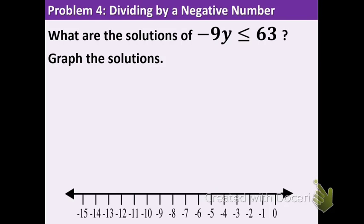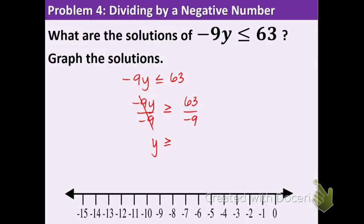Last problem: what are the solutions of negative 9y is greater than or equal to 63? To get y by itself, divide both sides by negative 9. Since we're dividing by a negative number, we flip the symbol. 63 divided by negative 9 is negative 7. So y is less than or equal to negative 7. Graph: closed circle on negative 7 because of the including line at the bottom, and shade towards the right for numbers bigger than negative 7. That completes this lesson — you can try the lesson check now or wait until we do problems together during class.